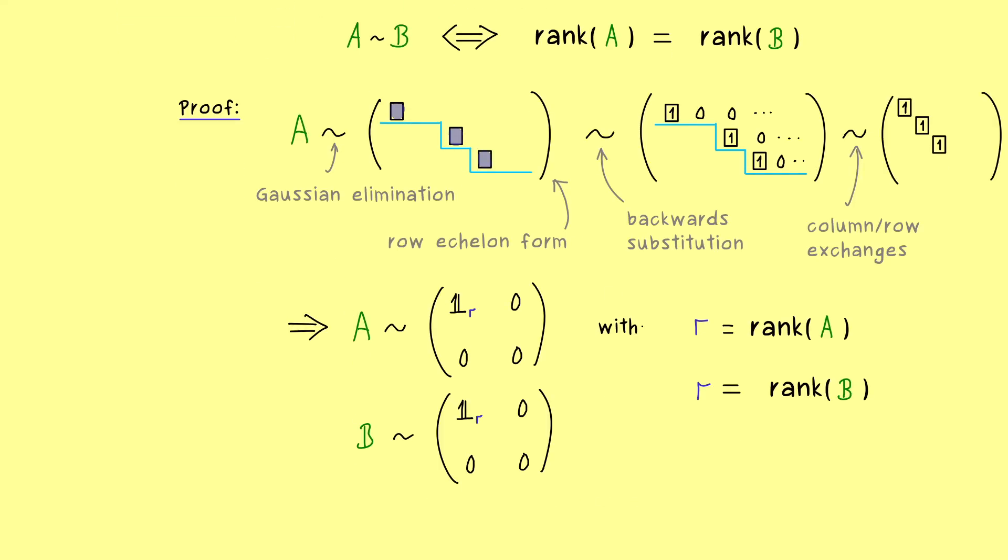And there we have it, the rank of a matrix completely describes the equivalence transformation. So please remember, if the rank is different, the two matrices cannot be equivalent. And now please note, this also implies that the rank of a general linear map can be calculated by using a matrix representation. So you see, it does not matter which matrix representation we choose, because all of them have the same rank.